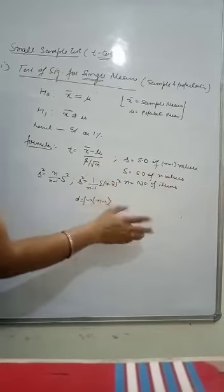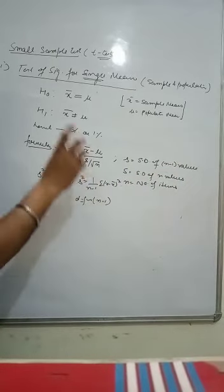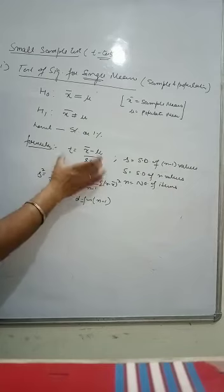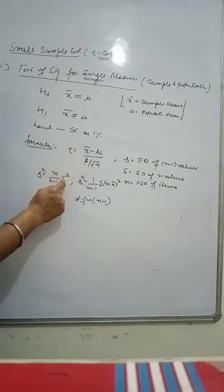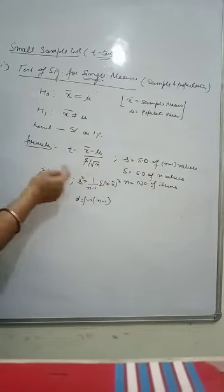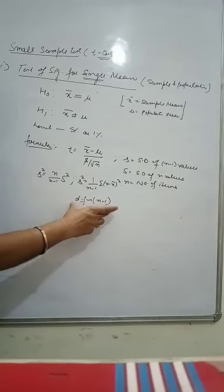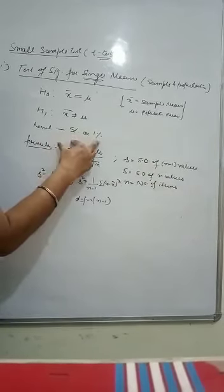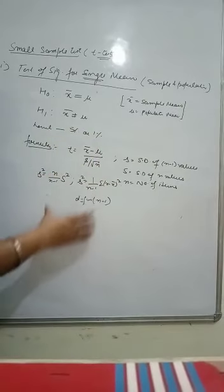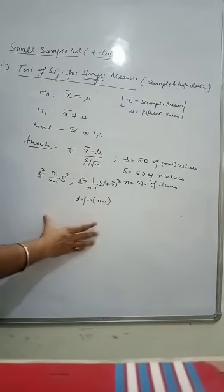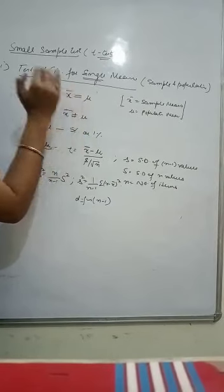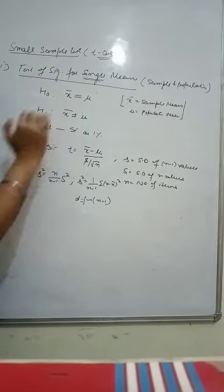S stands for standard deviation of n minus 1 values. Capital S for n values and this is the number of items. Just keep one thing in mind, whenever you are using this formula, you have to convert the standard deviation for n values into n minus 1 values. After this calculation, we are using the df and the level of significance, we go for the table value. And after seeing the table, we go for the conclusion, whether we have to accept this H0 or we have to reject this.